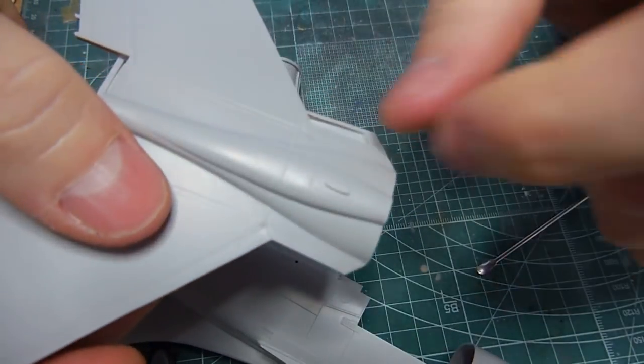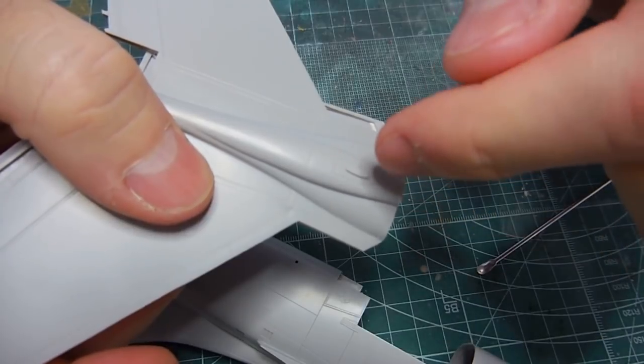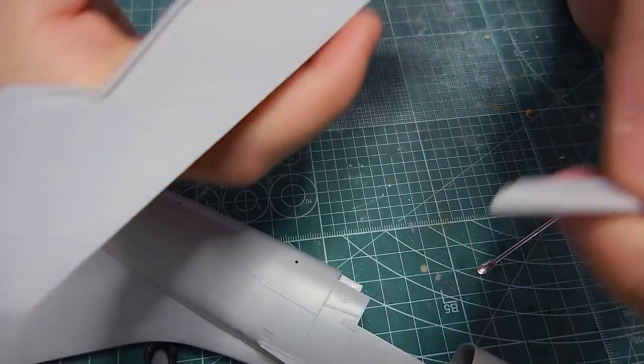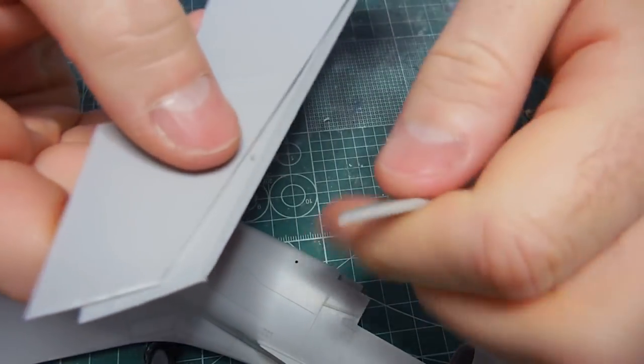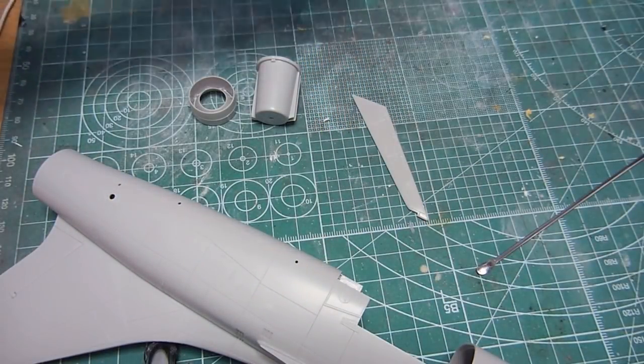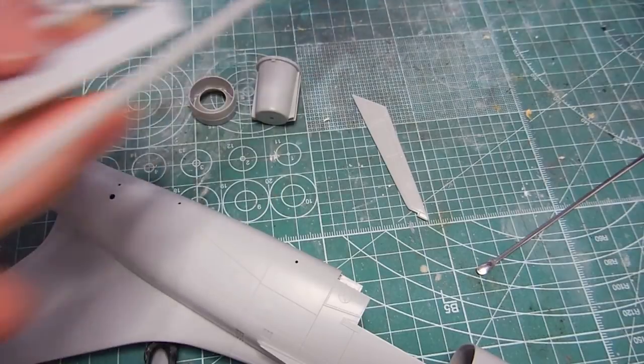And the top thing here, this is going to be a nav light up here. And then the clear part fits right on top of this. Yeah, it's going to look nice. All right, so to modify this thing here. Let me get the other piece, the corresponding piece. There we are.